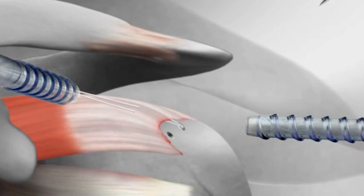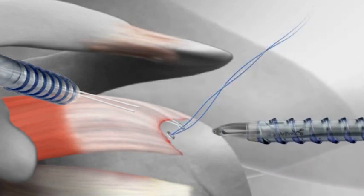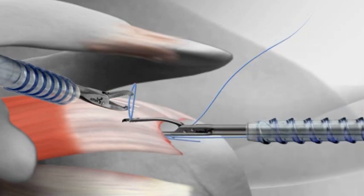The process is then repeated with the second anchor. Sutures in the second anchor are a different color to allow the surgeon to easily distinguish them from the first anchor.